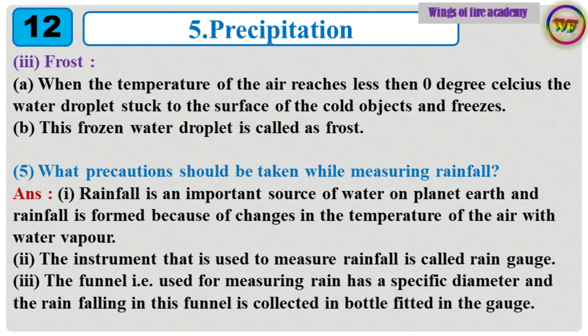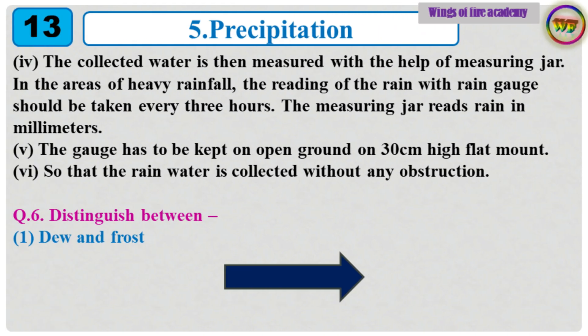5. What precautions should be taken while measuring rainfall? Answer: Rainfall is measured using a rain gauge. The funnel has a specific diameter and rain falling into it is collected in a bottle fitted in the gauge. In areas of heavy rainfall, reading should be taken every 3 hours. The measuring jar reads rain in millimeters. The gauge has to be kept on open ground on a 30 cm high flat mount so that the rainwater is collected without any obstruction.